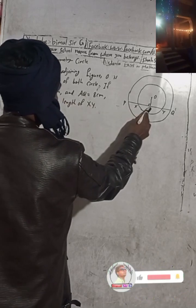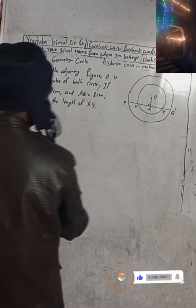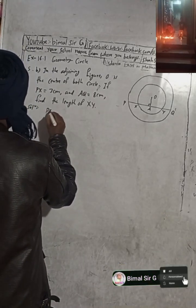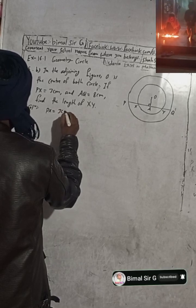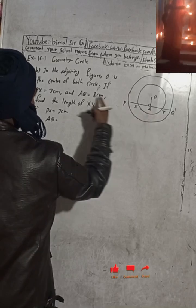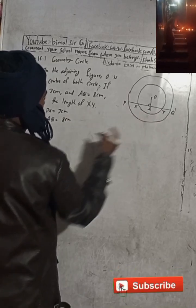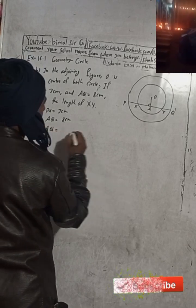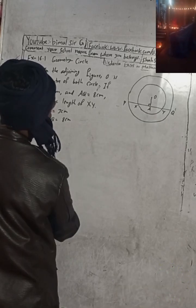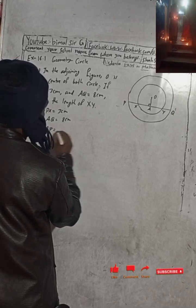We have to find the length of XY. Given: PX is equal to 3cm, and AQ is equal to 8cm.